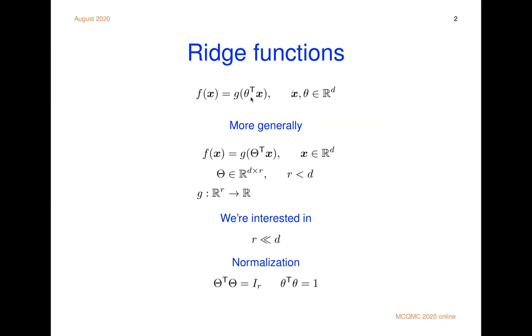More generally, f could depend on r different projections of x. So theta could be a matrix, a d by r matrix, and then g is a function that takes r dimensions into one scalar value. We are interested especially in the case where r is much smaller than d. r might be one or two or three. It's convenient to normalize this matrix theta. So it can be orthonormal. And when r is one, it's simply a unit vector.